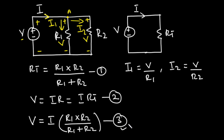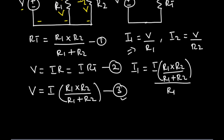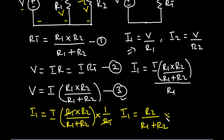Now substituting equation three into the expression for I1, we get I1 = [I × (R1 × R2) / (R1 + R2)] / R1. This simplifies as R1 cancels out, giving us I1 = (R2 / (R1 + R2)) × I, where I is the total current.